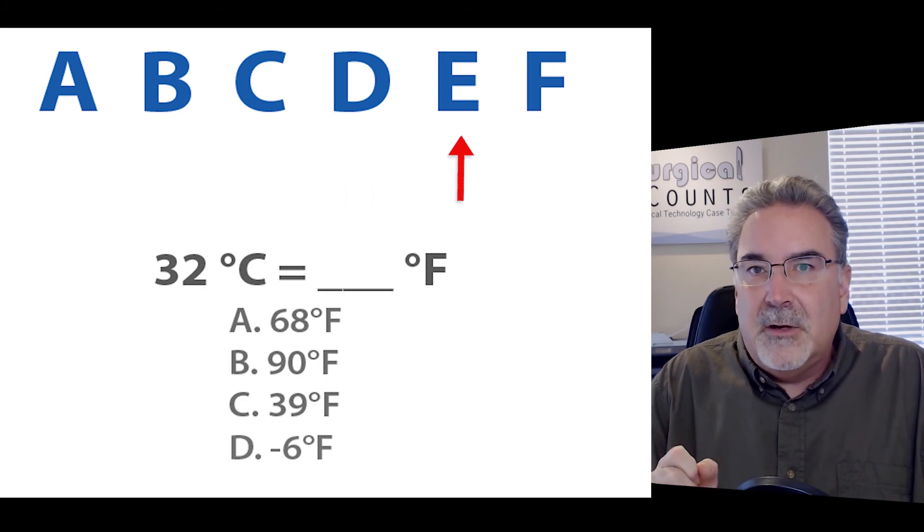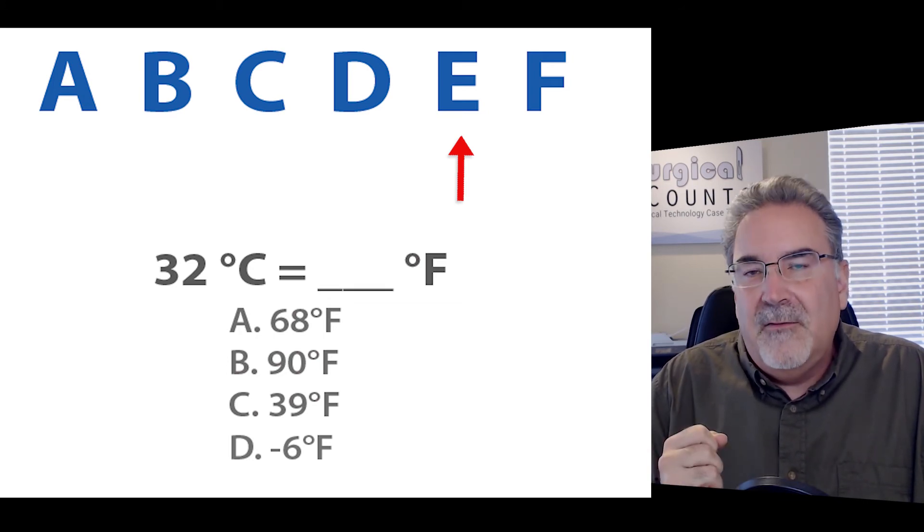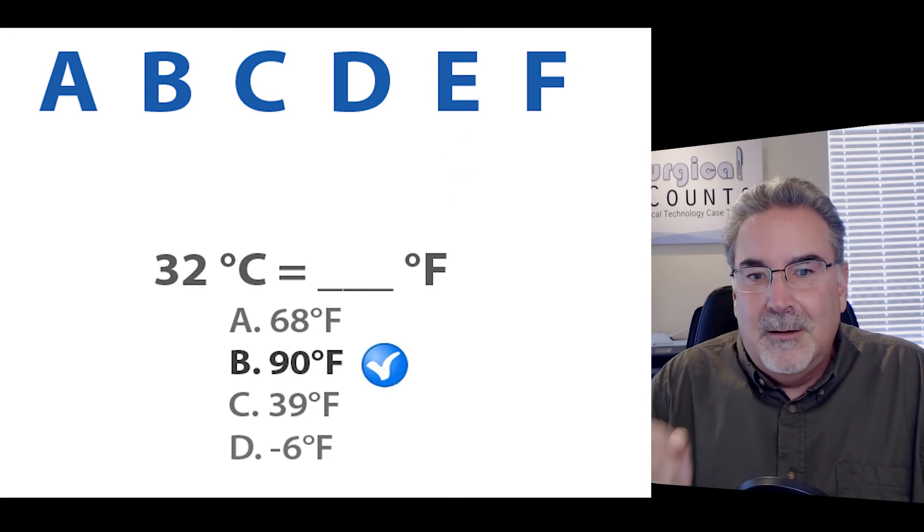E, that's our 30. We're going to add it because we're going up the scale. So we're going to add 30, 74, 84, 94. 94 is our estimate. 90 degrees is pretty close. And that's clearly the best answer given.